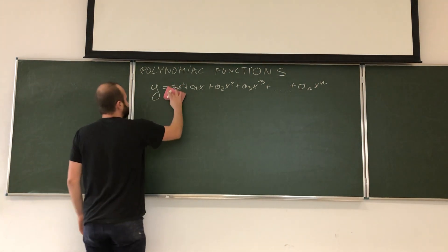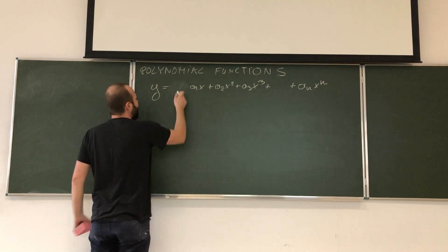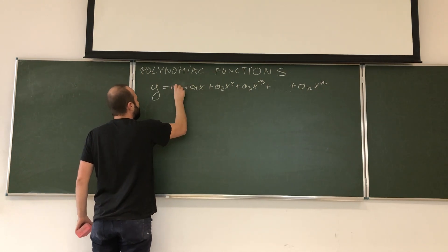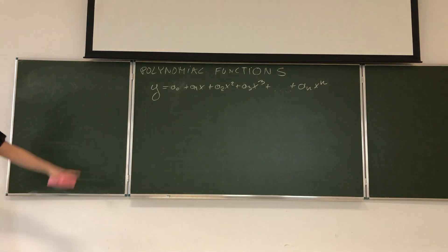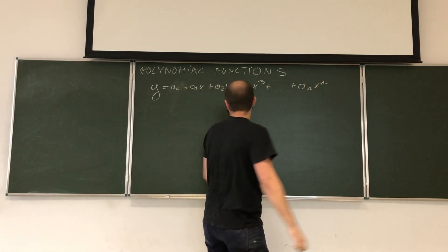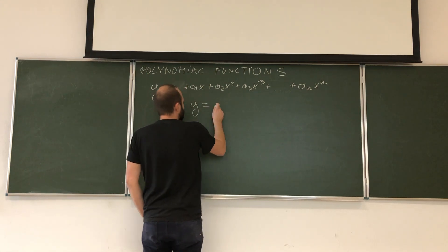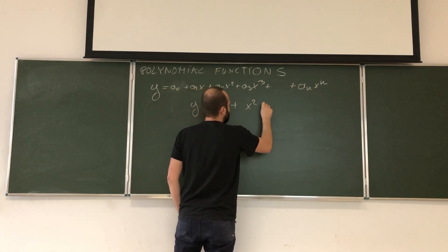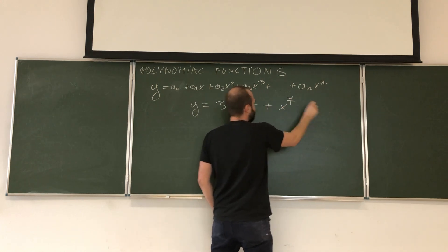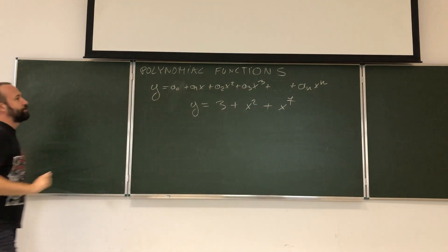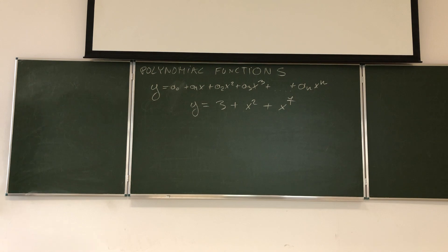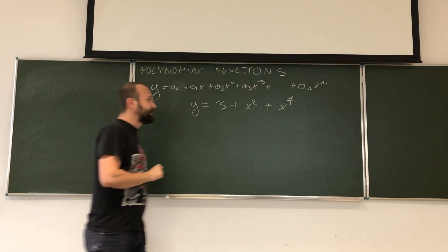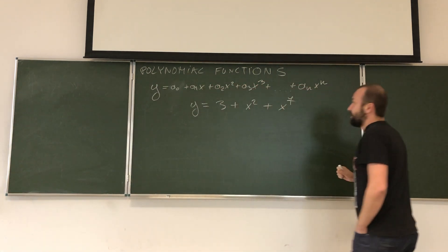The degree of the polynomial is given by the highest power. So if our polynomial would be 3 plus x squared plus x to the power of 7, we would call this a polynomial function of degree 7.